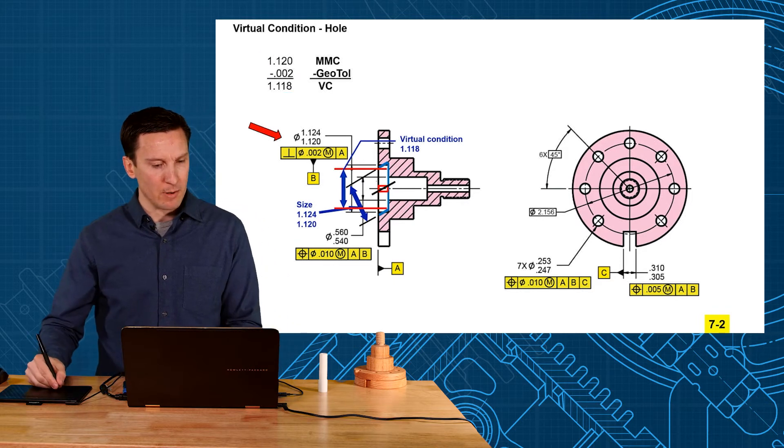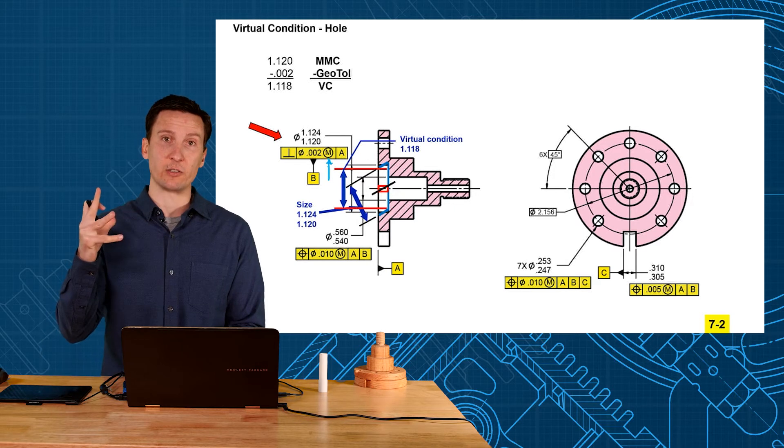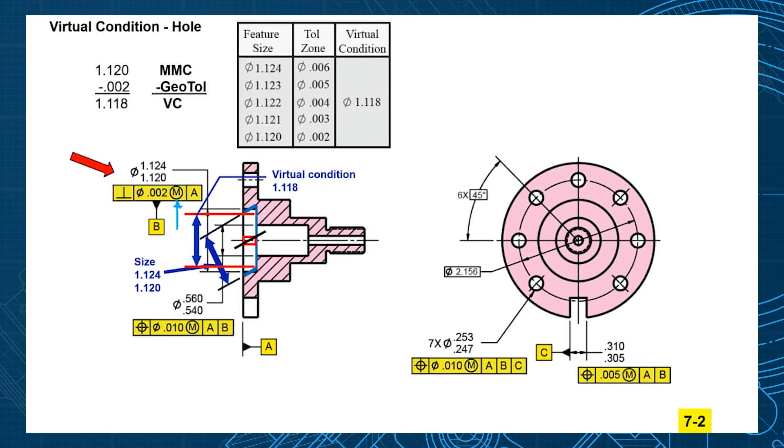Now it really works well with the MMC modifier here so remember the MMC modifier allows bonus tolerance as the hole gets bigger. Let me remind you of the chart. So at our maximum material condition 1 inch 120 you're allowed a tolerance zone of 2,000 and what happens when the hole gets bigger? Bonus.